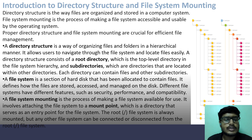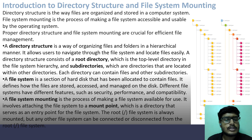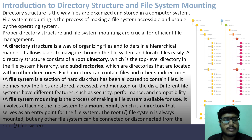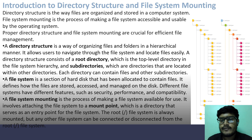It defines how the files are stored, accessed and managed on the disk. Different file systems have different features such as security, performance and compatibility. File system mounting is the process of making a file system available for use. It involves attaching the file system to a mount point, which is a directory that serves as an entry point for the file system. The root file system is always mounted, but any other file system can be connected or disconnected from the root file system, as shown in the figure.